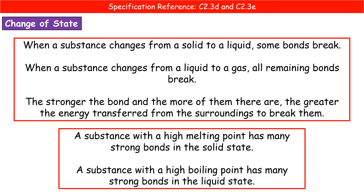In terms of how much energy this takes, the stronger the bond and the more of them there are, the greater the energy we have to transfer from the surroundings to the substance to break them. This gives us the link to melting point and boiling point. If asked why a substance has a high melting point, you need to say it has many strong bonds — be specific — in the solid state, because melting point means going from solid to liquid. For a high boiling point, same first part of the answer, many strong bonds, but this time specify it's in the liquid state.